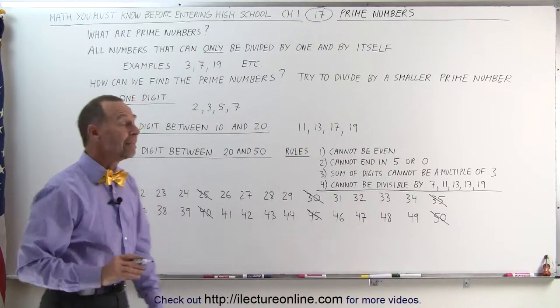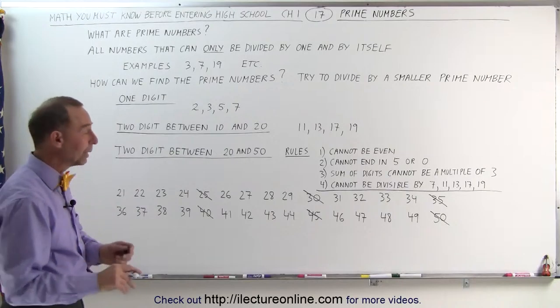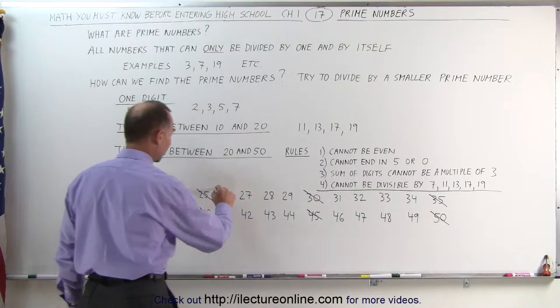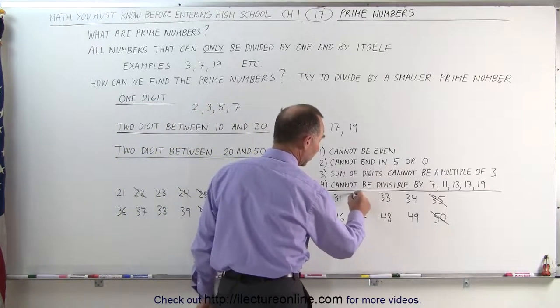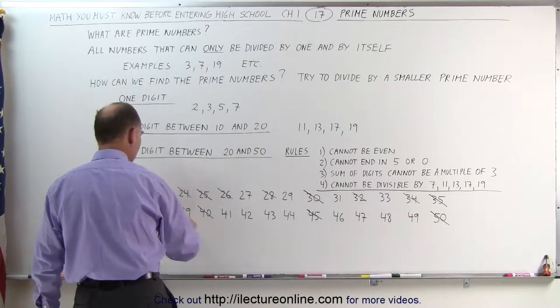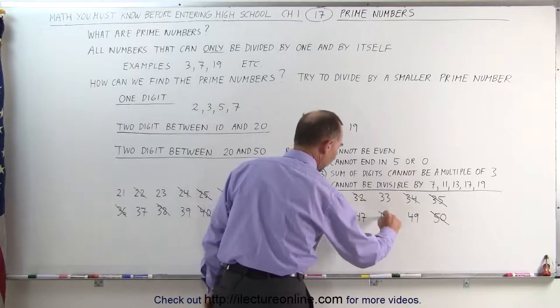Now let's go for all the even ones. If the number is even, that means it's divisible by 2, it cannot be a prime number. So we can get rid of all the even numbers: 22, 24, 26, 28, 30 would have been caught under that rule as well, 32, 34, 36, 38, 42, 44, 46, and 48.